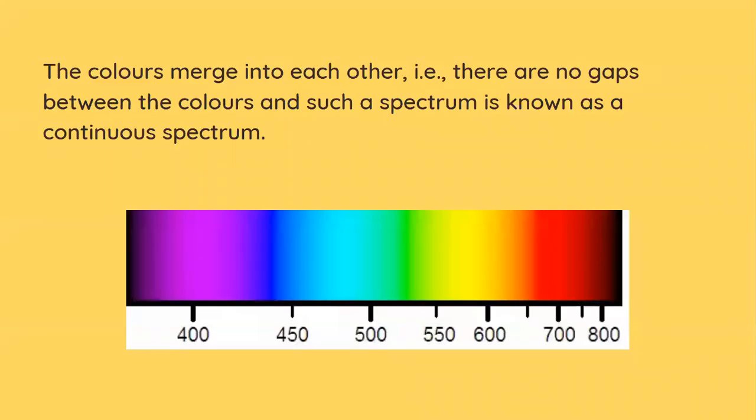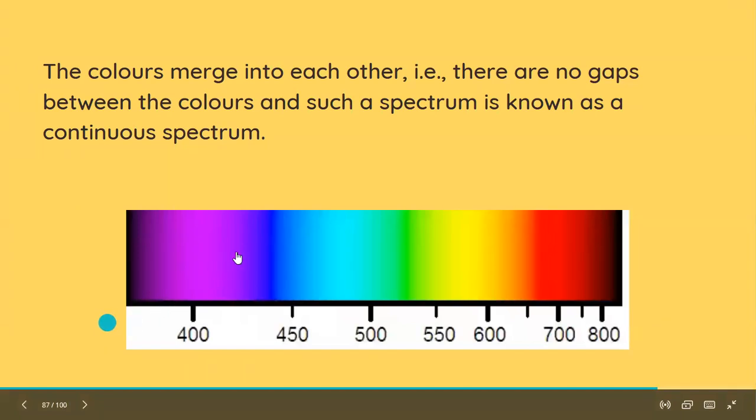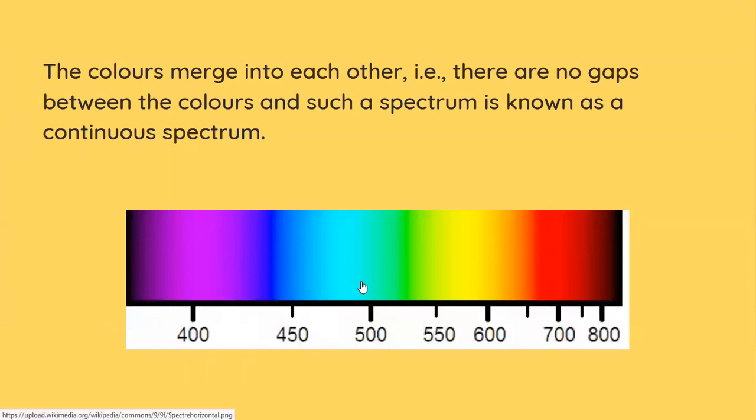So one thing you need to notice is that when you observe a rainbow, the colors might not be very well defined but you'll notice that there are no gaps in between the colors of the spectrum and this is the reason this is called a continuous spectrum. Continuous spectrum is the one which does not have any gaps in between.